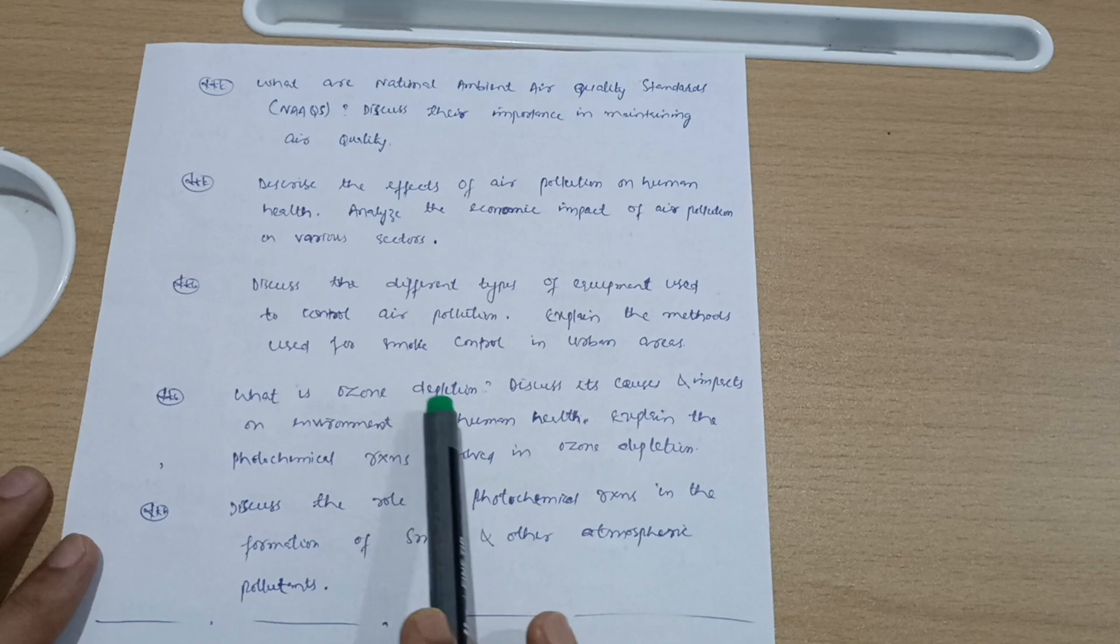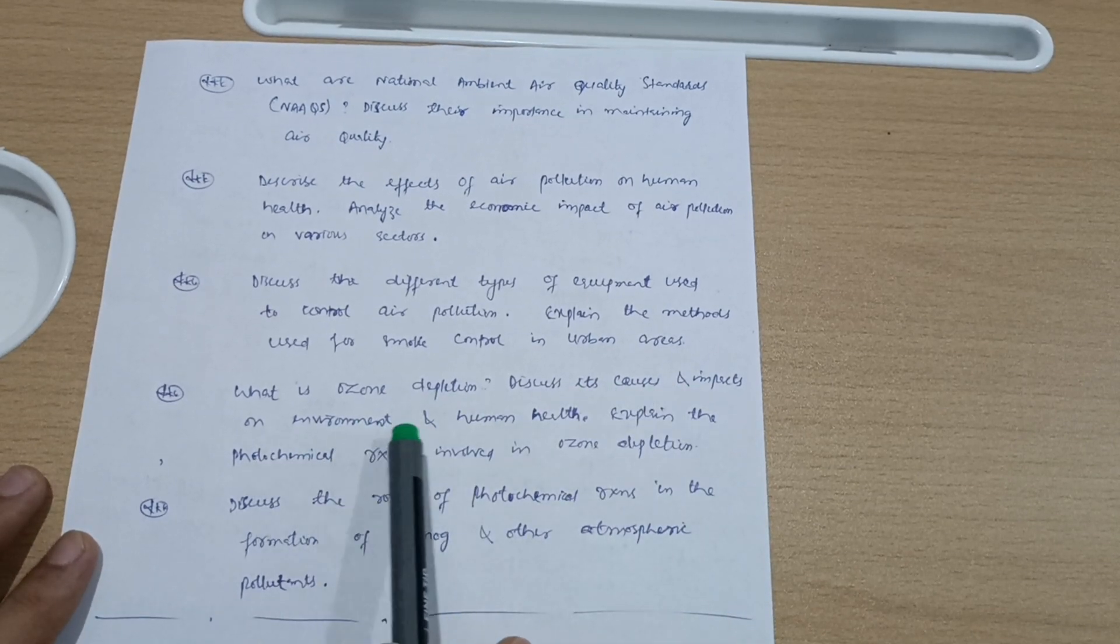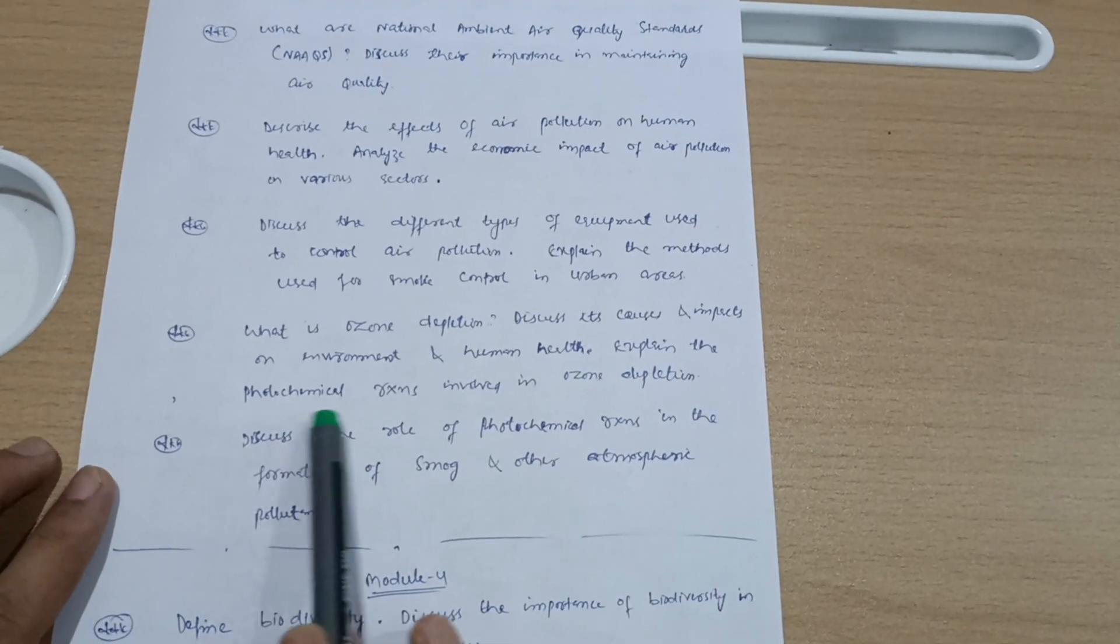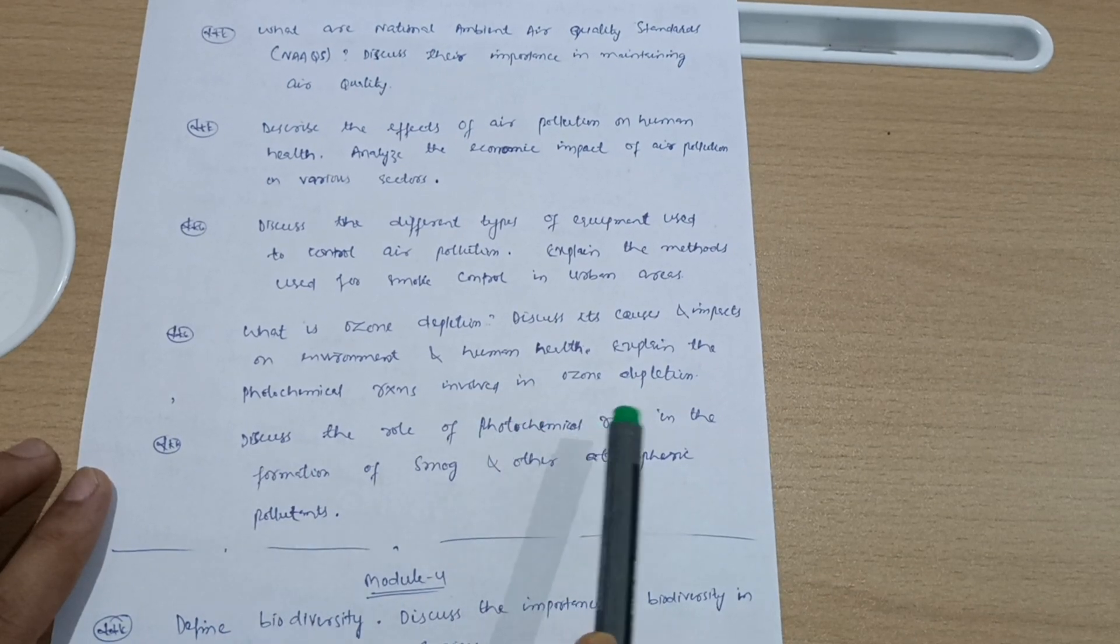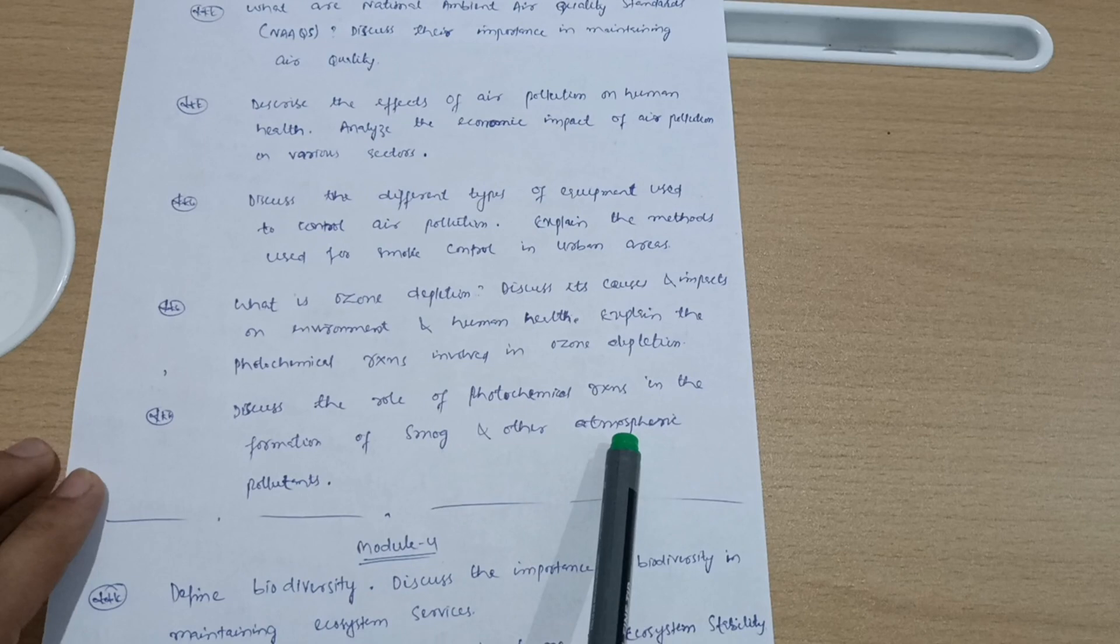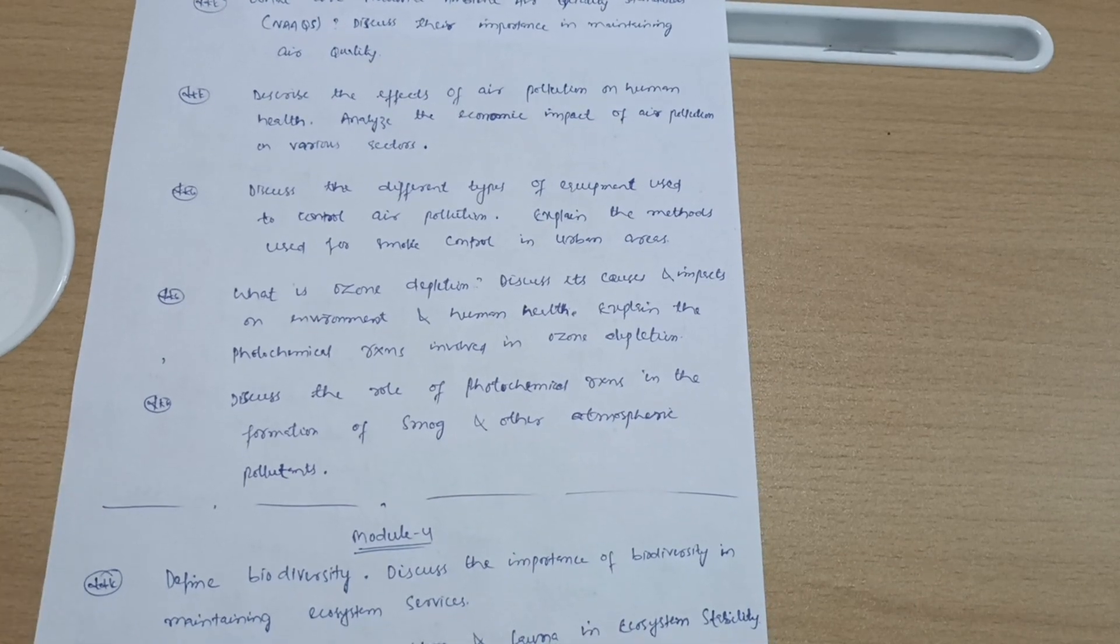Explain the methods used for smoke control in urban areas. What is ozone depletion? Discuss its causes and impacts on environment and human health. Explain the photochemical reactions involving ozone depletion. Discuss the role of photochemical reactions in the formation of smog and other atmospheric pollutants. This is about Module 3.